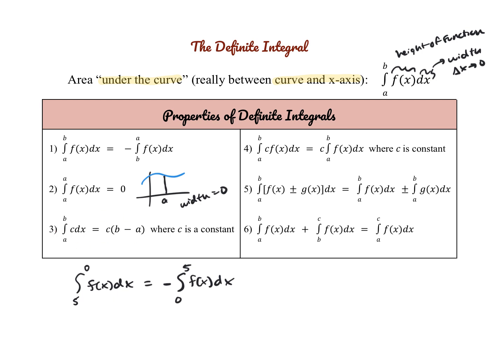The next property: the definite integral from a to b of a constant c dx equals c times (b minus a). If y equals c is your function — a horizontal line — and you're working from a to b, think of it as a rectangle. The width is b minus a and the height is c, so the area is just c(b − a).